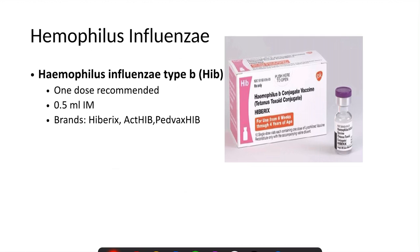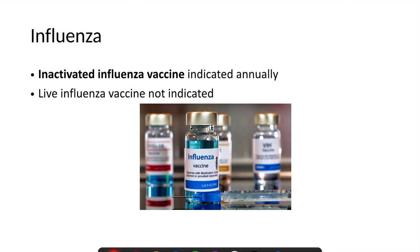The third vaccine required is the Haemophilus influenzae type B vaccine. One dose of 0.5 ml intramuscularly is recommended, and booster doses are not required after this single dose. The fourth vaccine recommended is the influenza virus vaccine, which comes in inactivated and live forms. The inactivated influenza vaccine is indicated annually for asplenic patients or those planned for splenectomy. Live vaccines are not indicated.